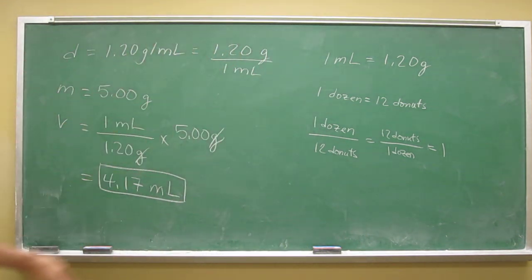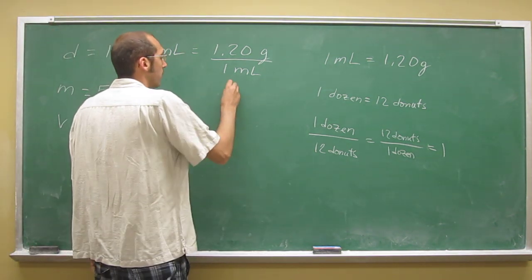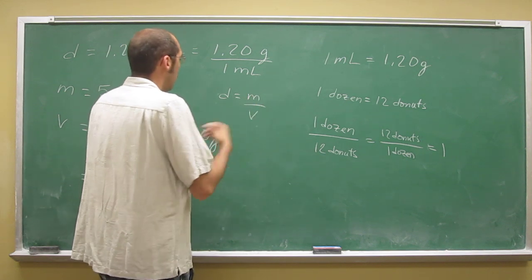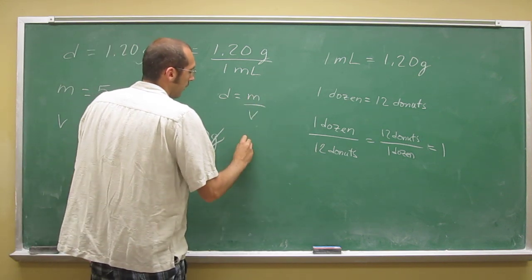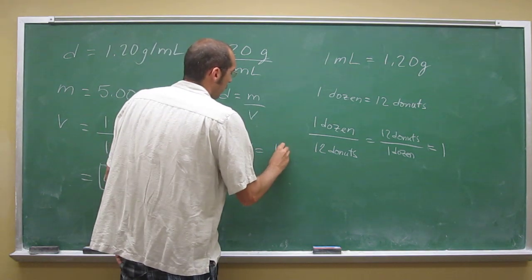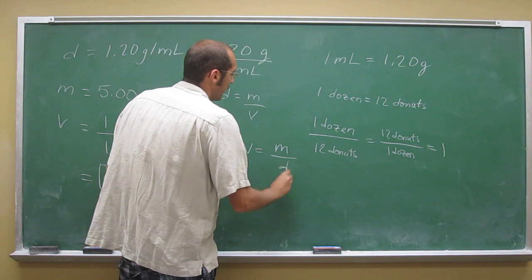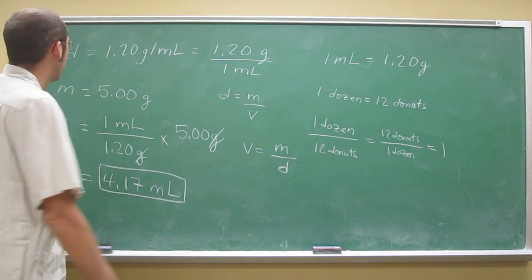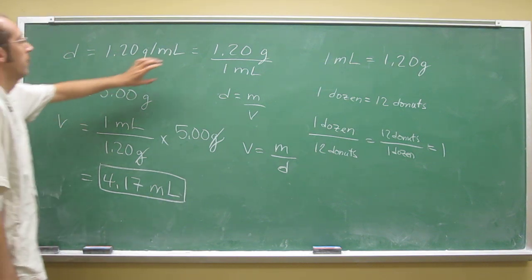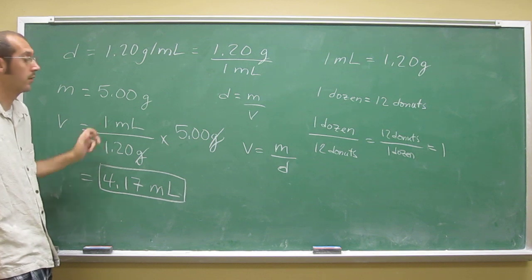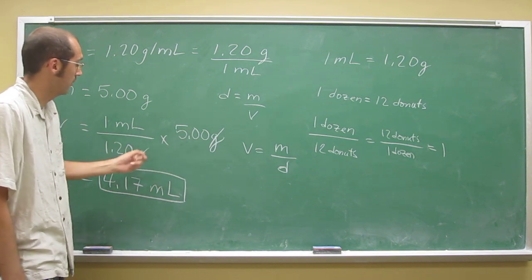So again, we didn't even have to memorize that density stuff, right? So if you want to do it, density equals mass over volume. You could rearrange this equation to get volume equals mass divided by density. And is that what we did? Try it on your own, see if that's what we did. If we flip this thing over, it's like doing the inverse, so mass divided by density.